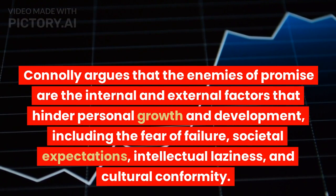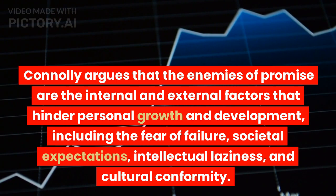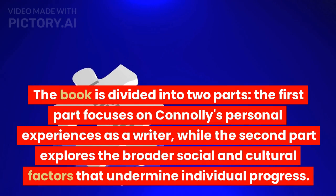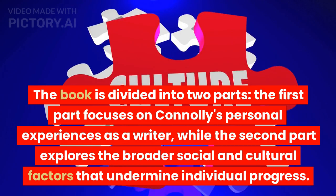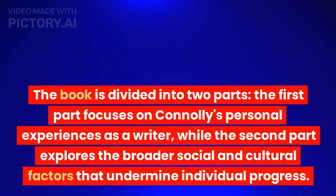These enemies include the fear of failure, societal expectations, intellectual laziness, and cultural conformity. The book is divided into two parts: the first part focuses on Connelly's personal experiences as a writer, while the second part explores the broader social and cultural factors that undermine individual progress.